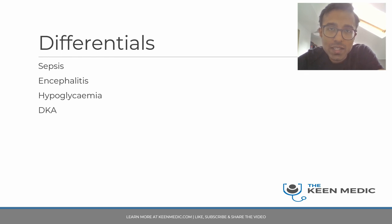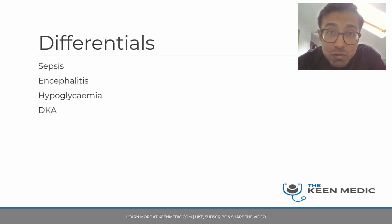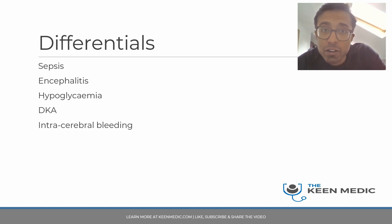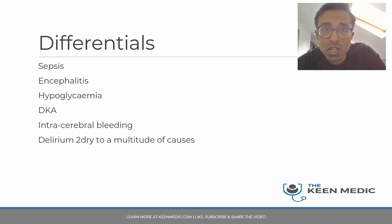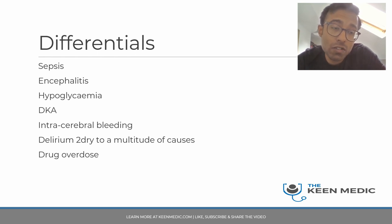Diabetic ketoacidosis is another key differential — the other end of the spectrum, where there is uncontrolled diabetes. We don't know the blood sugar or the venous blood gas acid-base status, so we need to keep a wide differential list. Intracerebral bleeding is also possible — spontaneous intracranial haemorrhage can occur with arteriovenous malformations or aneurysms. Delirium secondary to electrolyte imbalances, constipation, or other causes is also on the list, as is drug overdose from her medications.